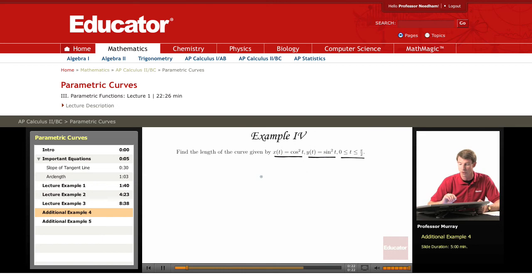So remember our arc length formula is x'² + y'². Take the square root of that and integrate it.